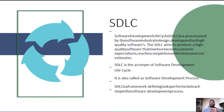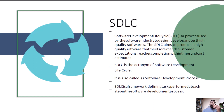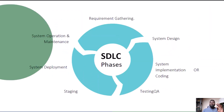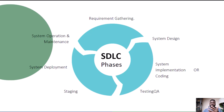Software Development Lifecycle, or SDLC, is like a roadmap that guides the development of a software application. Think of it as a set of well-defined steps and processes that software developers follow to create high-quality software products. The SDLC consists of several distinct phases, and each phase plays a specific role in the development process.